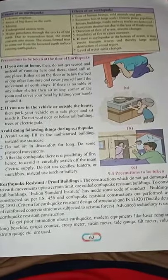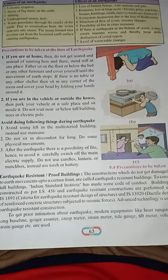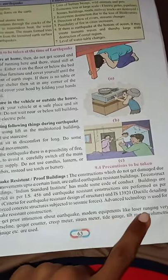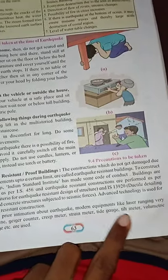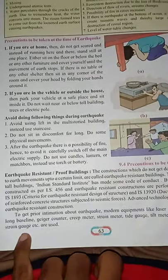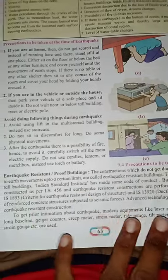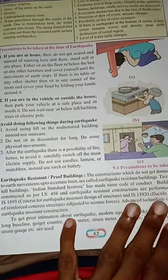Advanced technologies are used for earthquake-resistant construction. To get prior information about earthquakes, modern equipment like laser ranging, long baseline, creep meter, strain meter, tide gauge, tilt meter, and volumetric strain gauge are used. These are the things covered today. Read page numbers 62 and 63 carefully. The rest of the chapter will be finished tomorrow, and chapter number 8 notes are also remaining.